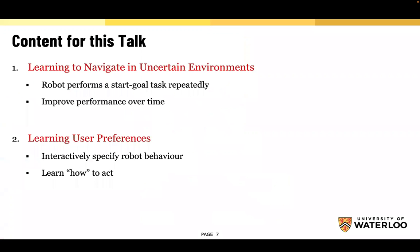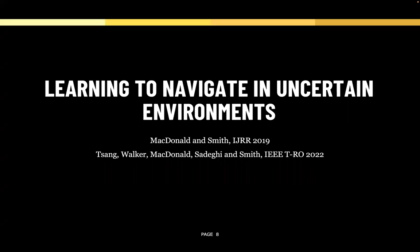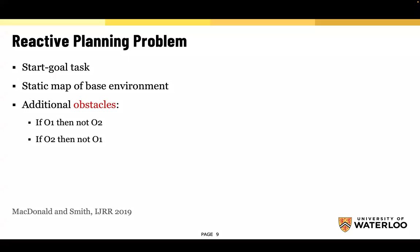The content for this talk covers two parts: first, learning to navigate in uncertain environments, and second, learning user preferences. Let's start with the first part and build up complexity, beginning with the simplest version called the reactive planning problem.